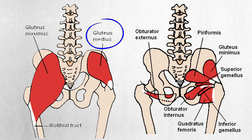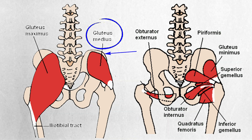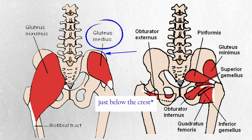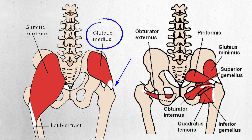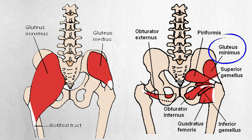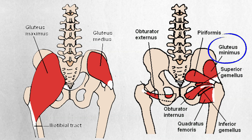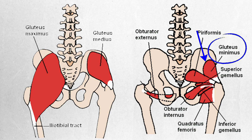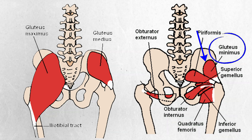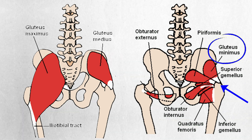Gluteus medius originates — attaches — from the iliac crest down to the trochanter major of your femur, your hip bone. Gluteus minimus attaches from the outer side of the ilium bone to also the trochanter major.